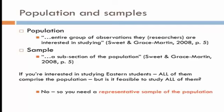Since it's nearly impossible to research every single person in a population, we have samples — that's a subsection of the population. In the example below, if you're interested in studying Eastern students, all of them comprise the population, but is it feasible to study all of them? No. So you need some kind of sub-sample, but it has to be representative of the population you're studying, or your findings aren't going to be relevant or even applicable to the population.